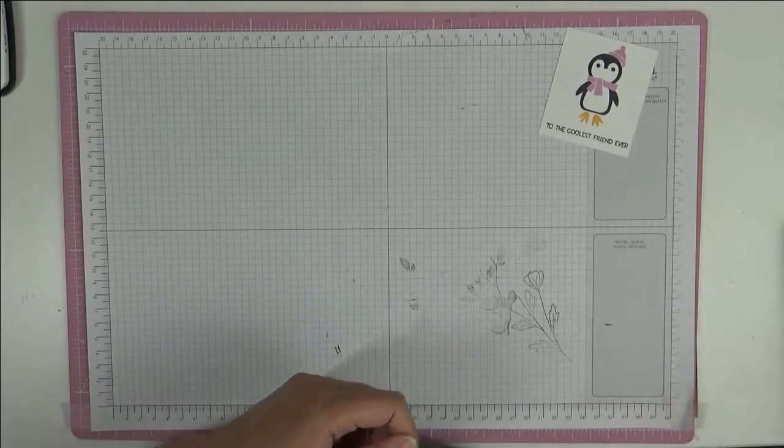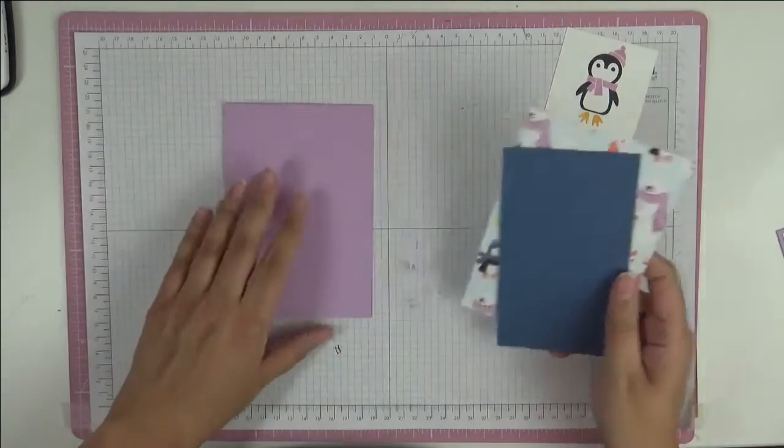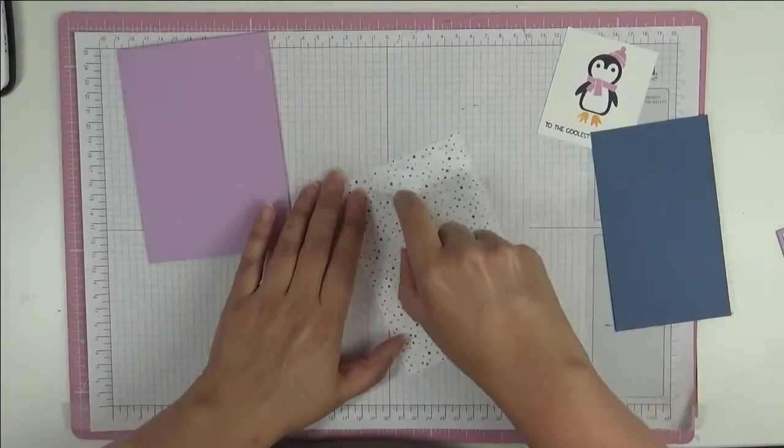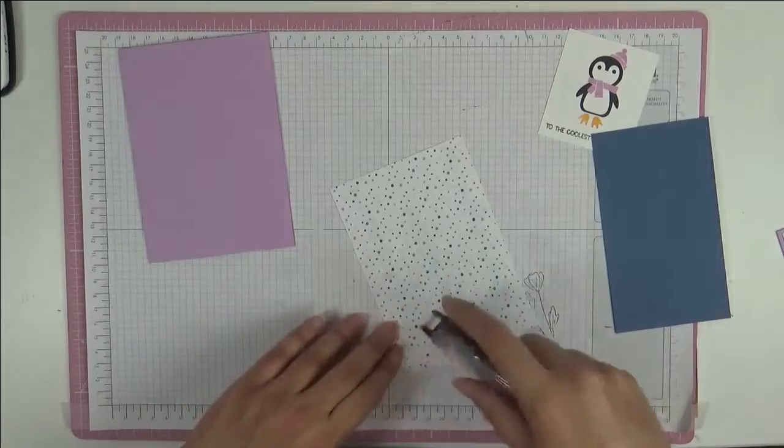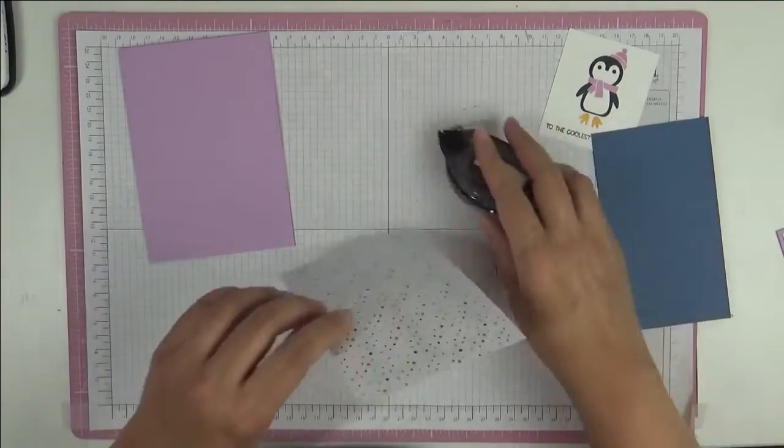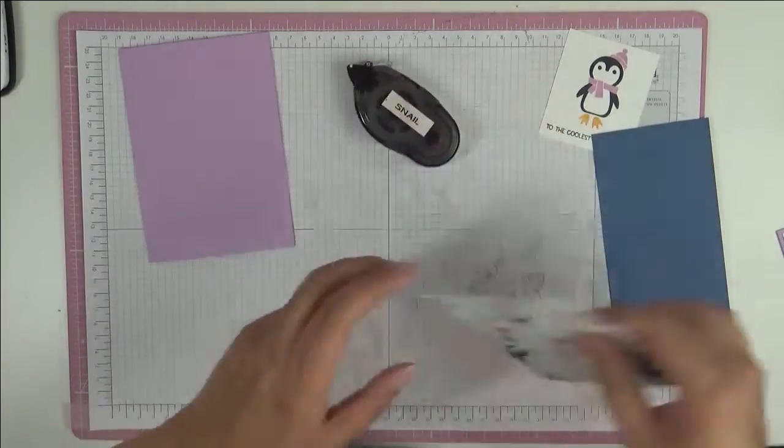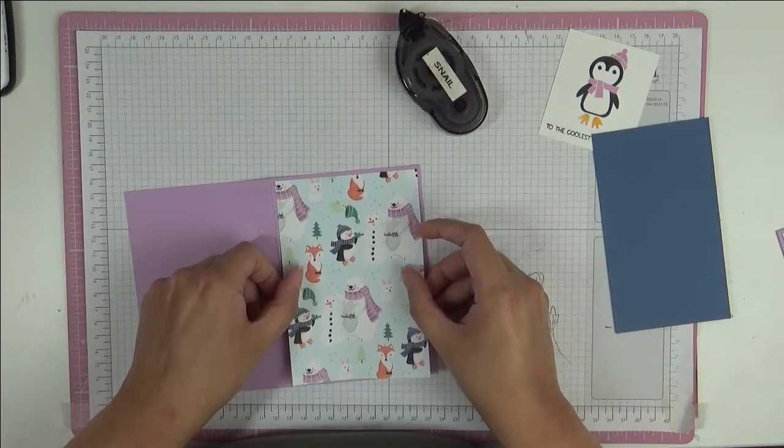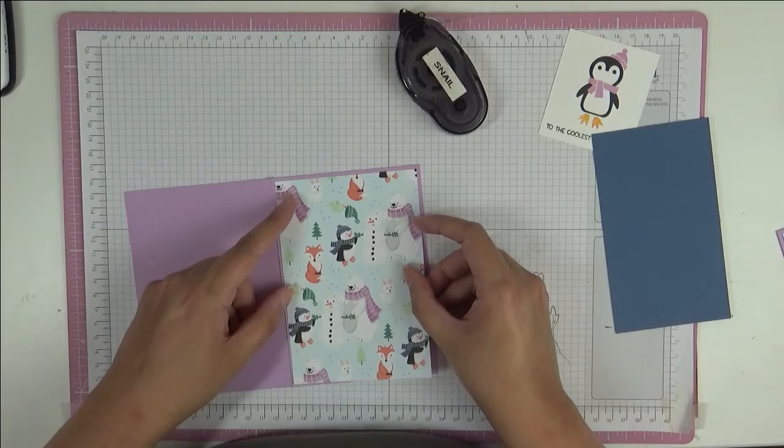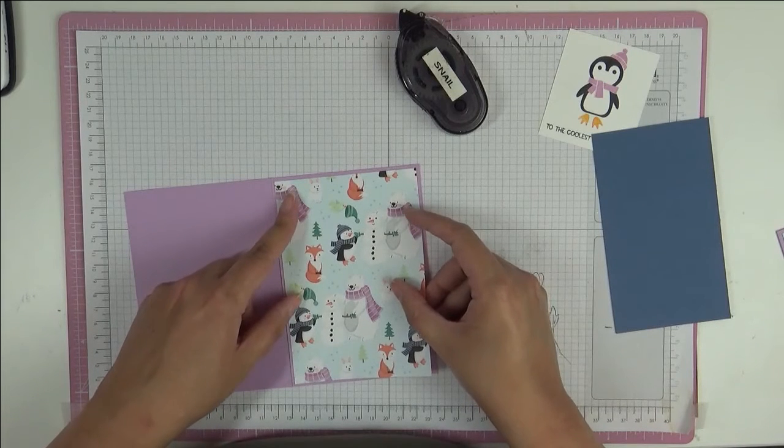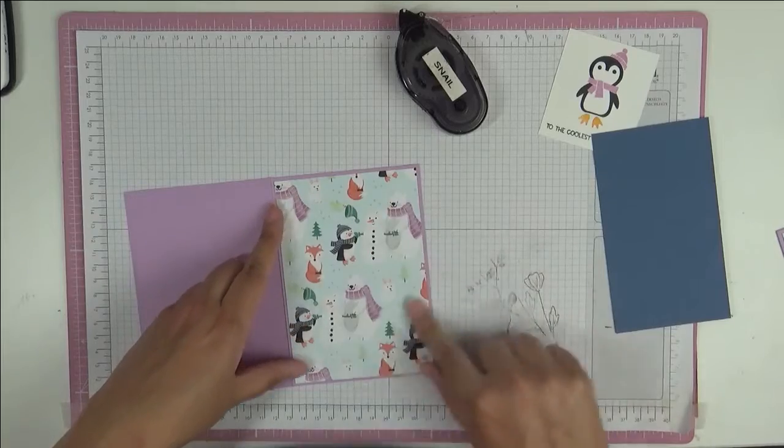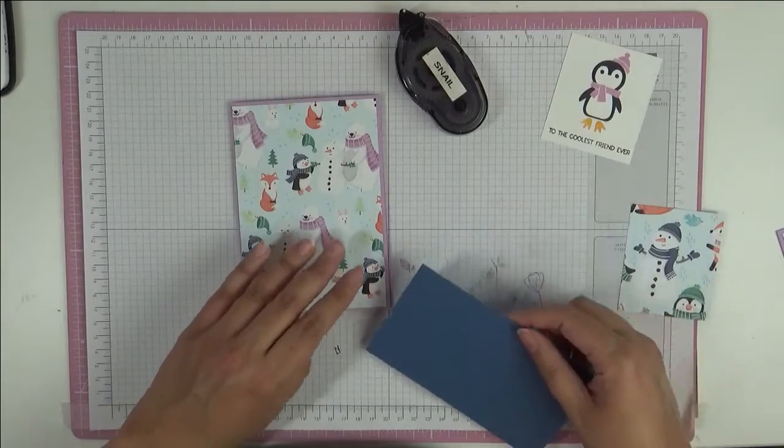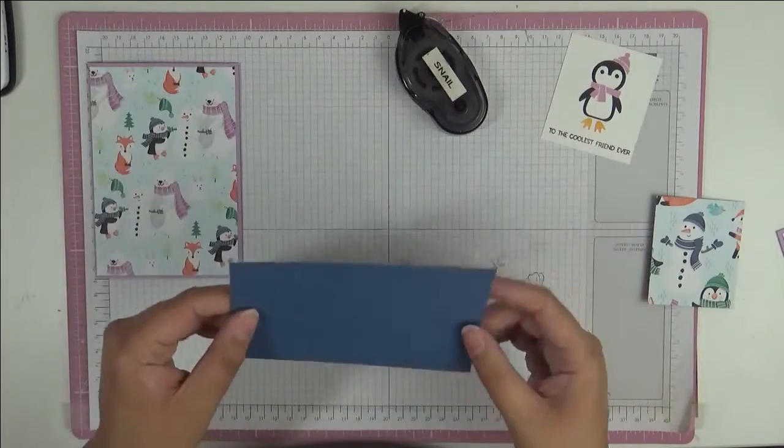Our card base is Fresh Freesia, a standard A4 sheet cut in half and then folded in half. I've also got this gorgeous penguin paper that matches the stamp set and the punch so beautifully. You can buy your punch in the catalogue that will come out in August. You can buy this, your punch, some cardstock, your stamp set, and ink, and then you can get your paper for free.